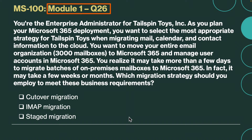Question number 26. You are the enterprise administrator for Tailspin Toys. As you plan your Microsoft 365 deployment, you want to select the most appropriate strategy for migrating mail, calendar, and contact information to the cloud. You want to move your entire email organization, which includes 3000 mailboxes, to Microsoft 365 and manage user accounts there. It may take a few weeks or months to migrate batches of on-premises mailboxes. Which migration strategy should you employ? Is it cutover, IMAP, or staged migration? The correct answer is staged migration. A staged migration migrates batches of on-premises mailboxes to Microsoft 365 over the course of a few weeks or months, and ultimately allows you to manage user accounts in Microsoft 365.